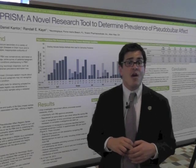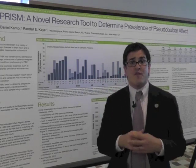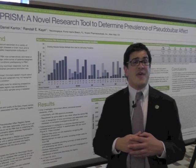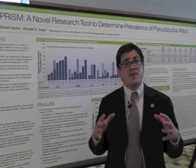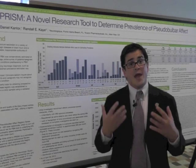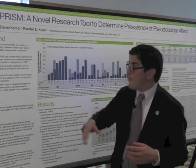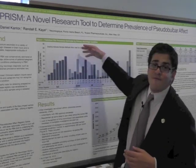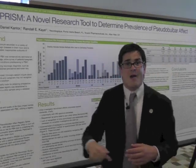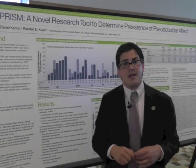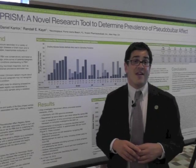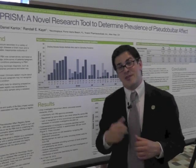We're doing a large epidemiological study around the United States, getting thousands of patients with these six underlying conditions and measuring their rates of pseudobulbar affect. We have different rates from other trials, so the idea is to look at point prevalence right now in the United States — and this is the data that I present here. Thank you so much for joining me on my poster.